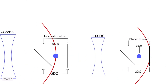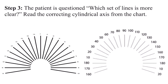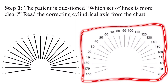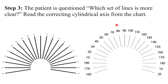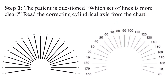Step 3 is to ask the patient which set of lines is more clear and read the correcting cylindrical axis from the chart. If you have the type of chart with correcting axis marked and the patient says a line at 170 degrees is clearest, you can directly read the correcting cylindrical axis as 170 degrees. If you are using a chart where the actual line orientation is shown and the patient prefers the 80-degree line, you add 90 degrees to get the cylindrical axis orientation. Both chart types give the same result.